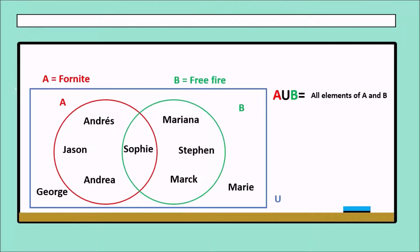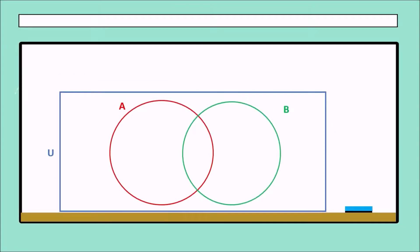Those elements are A union B. And we have A intersection B — that is elements that have the same characteristics. In this case, it is people who like Fortnite and also like Free Fire. Who fits? Sophie. In this case, we have just Sophie, because Sophie likes both Fortnite and Free Fire.